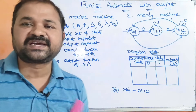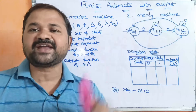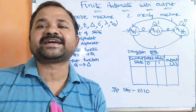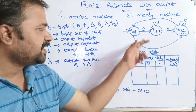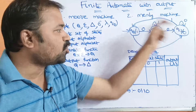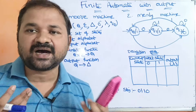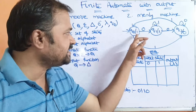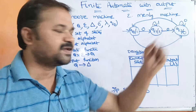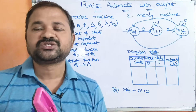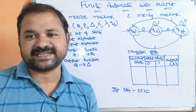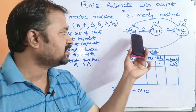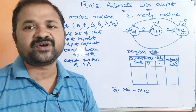Here Q is similar to finite automata only. Q represents a finite set of states. If we observe this Moore machine, Q means the set of states. What are the states here? Q-naught, Q1, Q2 — those three are the states. So Q is nothing but {Q-naught, Q1, Q2}.